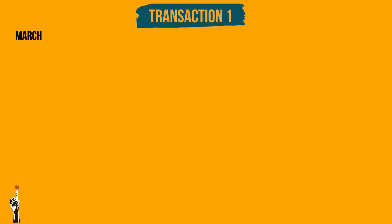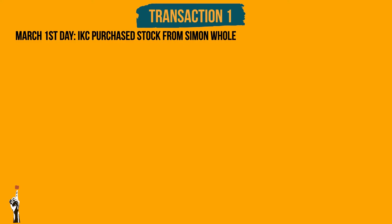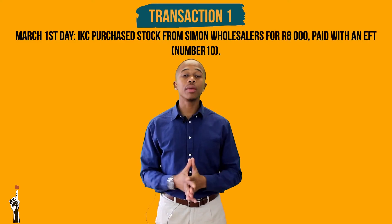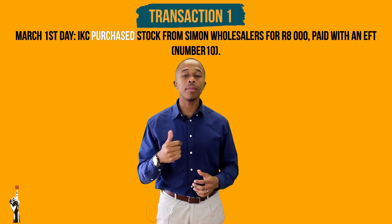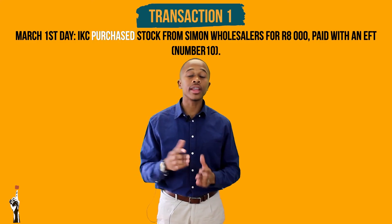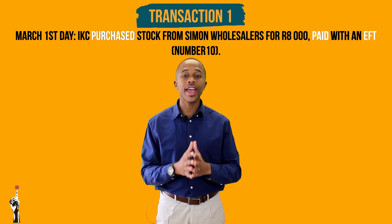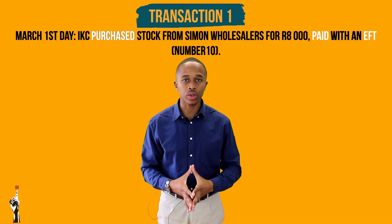Can you identify in which journal this transaction fits in? Transaction number one: IKC purchased stock from Simon Wholesalers for 8,000 Rand, paid with an EFT number 10. The company purchased with EFT and made a payment, and therefore it should be recorded on the cash payments journal.